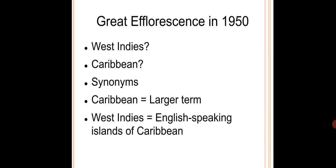By the year 1950, there was a great efflorescence in West Indian writing — a flowering of West Indian writing. For the purpose of the essay, Brathwaite uses the terms West Indies and Caribbean synonymously. However, he also makes a distinction, saying Caribbean is a slightly larger term that refers to the whole region, whereas West Indies refers to the English-speaking islands of the Caribbean.